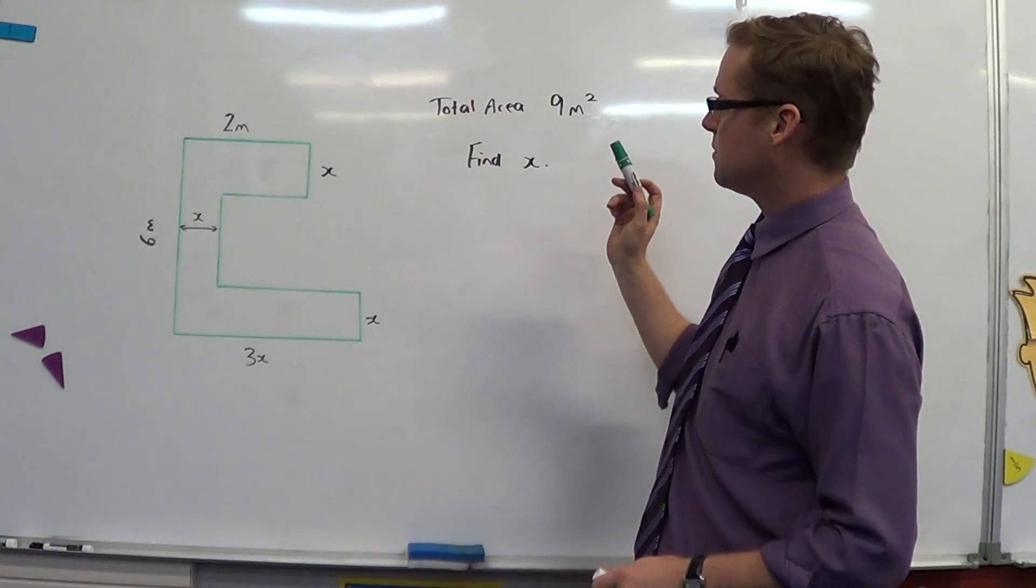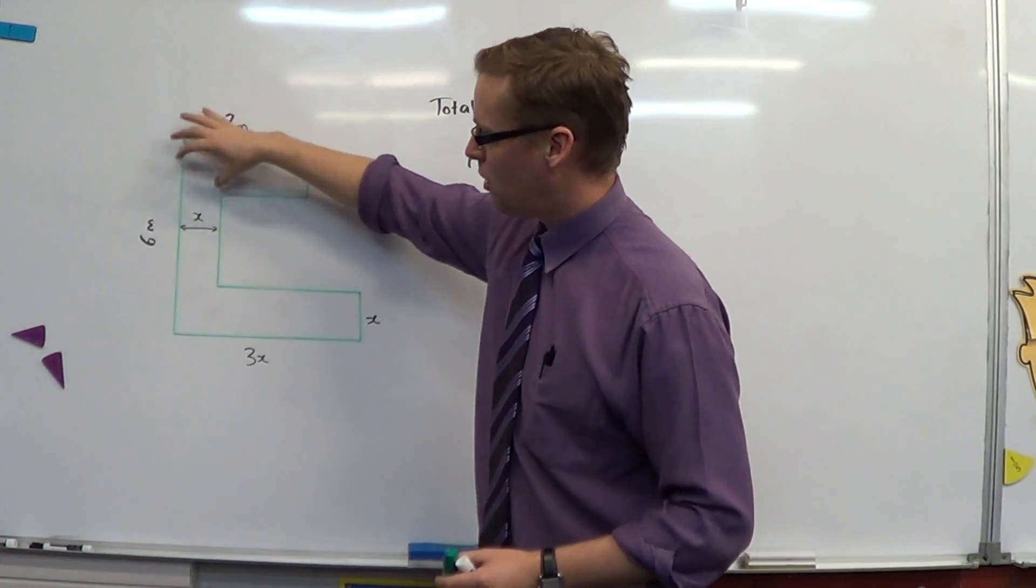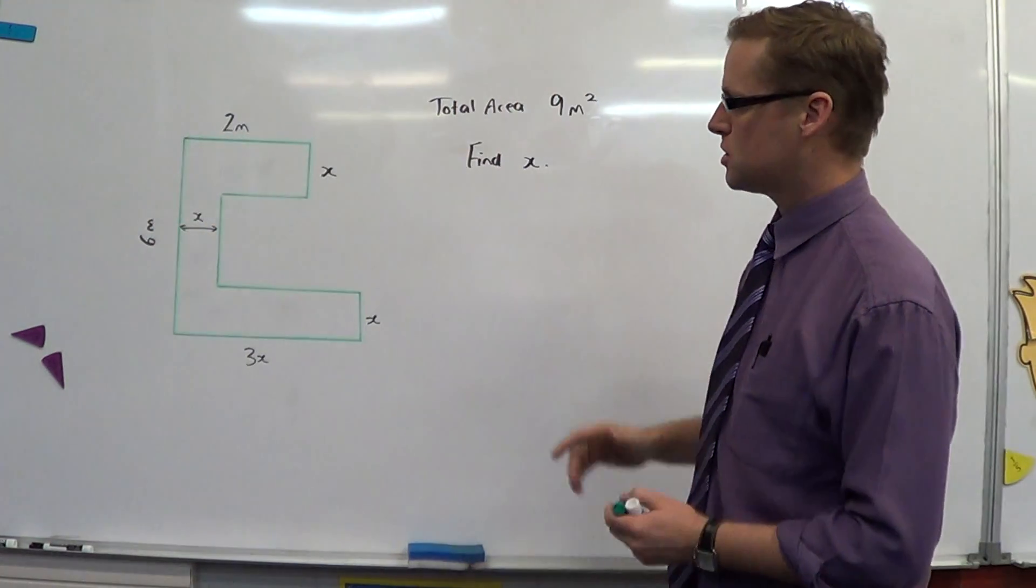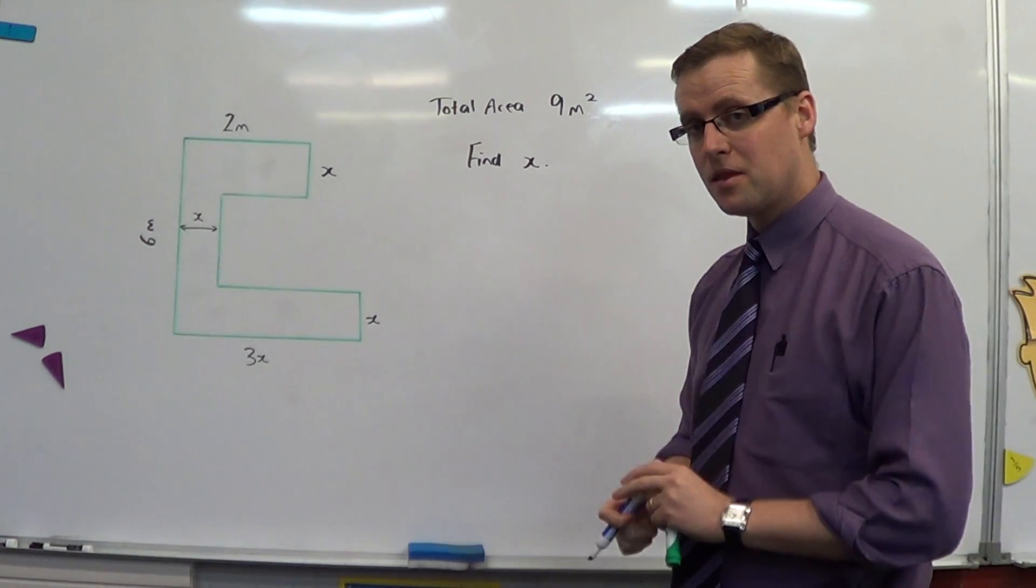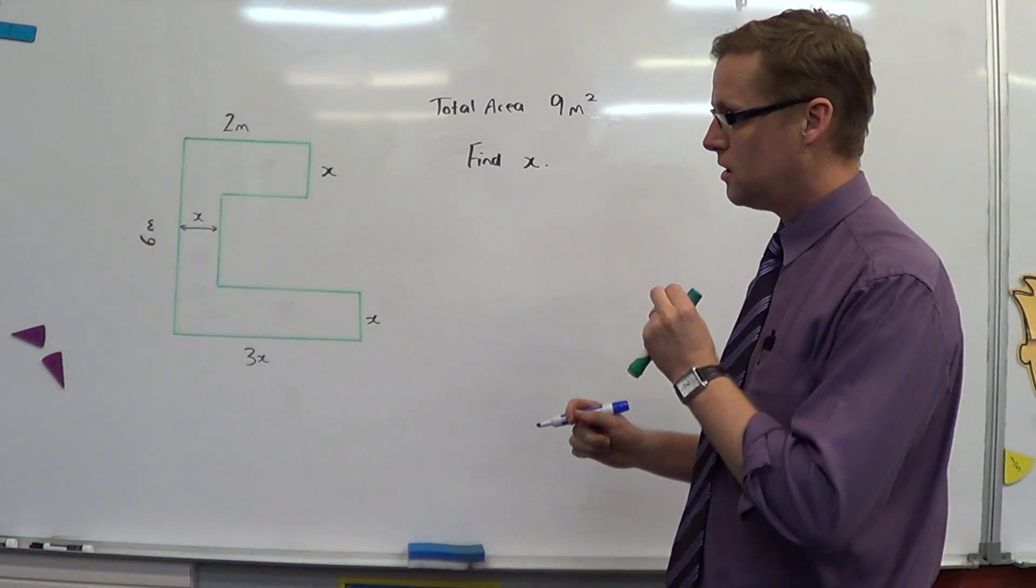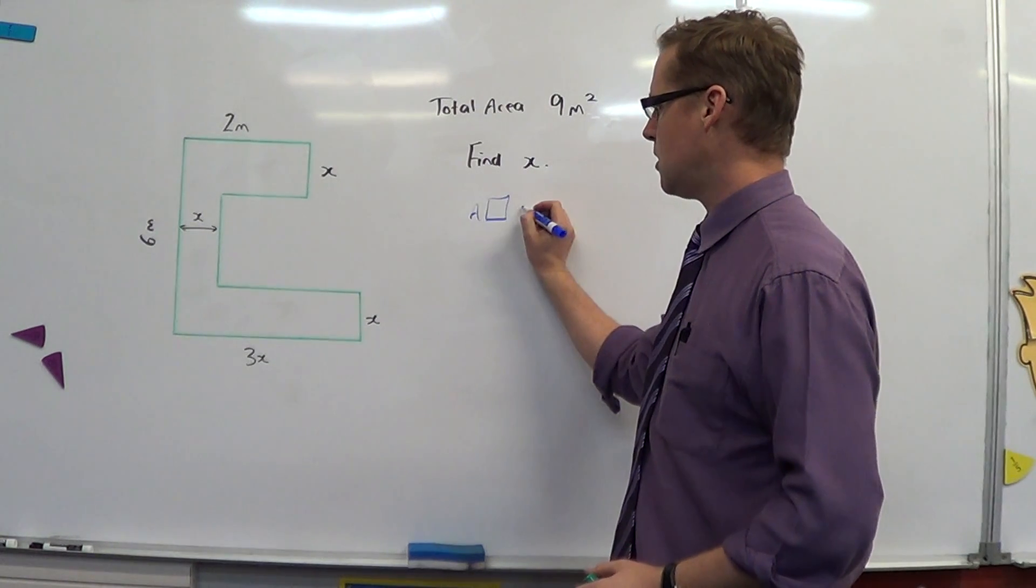We're asked to find the value of x, and we are told that the total area of the shape here is 9 metres squared. To do this we need to be thinking about the fact that we've got rectangles. And a rectangle, the area of a rectangle is base times height.